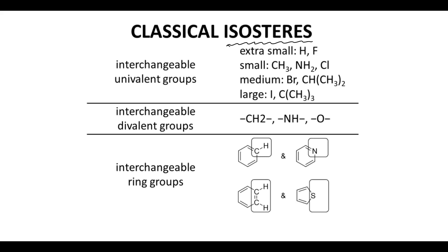Why would anyone want to make structural changes that do not affect potency? Well, in some cases the lead has excellent potency, but other properties, like ADME or toxicity, need to be improved. The isosteres on the screen are called classical isosteres.